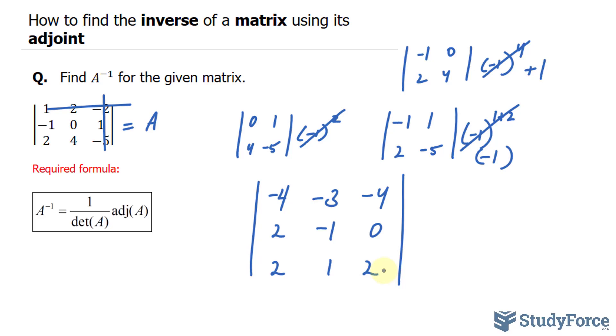To transpose means to change all of the rows into columns and vice versa. So this row right here now becomes a column, negative 4, negative 3, negative 4.